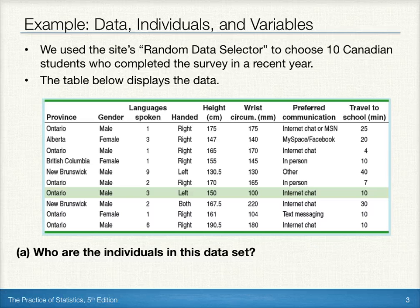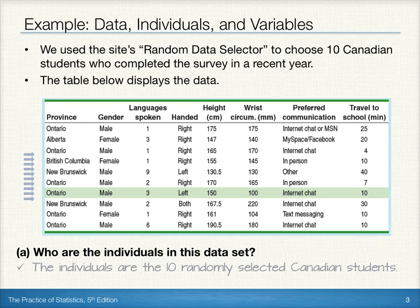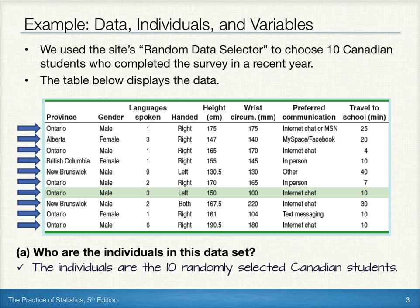For this example, the first thing we'll want to do is identify the individuals in the data set. Recall, individuals are the objects that are described by a set of data, and they may be people, animals, or things. In this example, the individuals are the 10 randomly selected Canadian students. Each row within the table represents one individual.